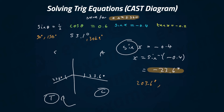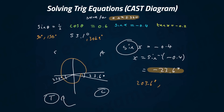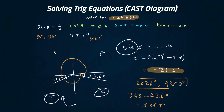For the second value, we did a full 360 but went back 23.6 degrees. So 360 minus 23.6 is 336.4 degrees. These are our two values for sine x equals minus 0.4.